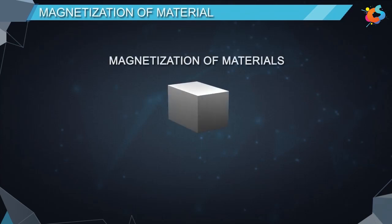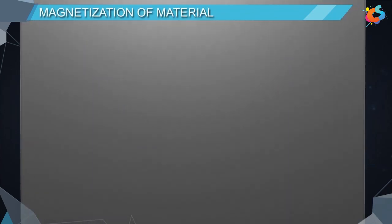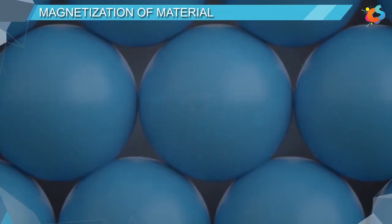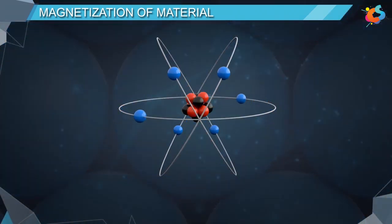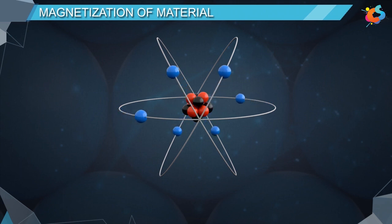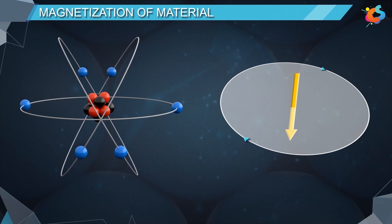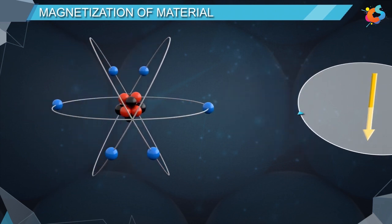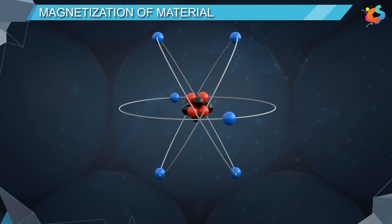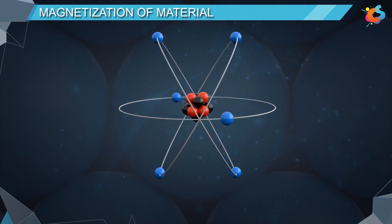Magnetization of material. Matter is made up of atoms which are made up of electrons and a nucleus. The electrons revolve around the nucleus in a circular orbit — just as a current carrying loop constitutes a magnetic dipole moment, electrons moving in these orbits also constitute a magnetic dipole moment.